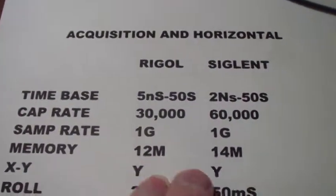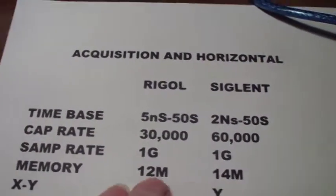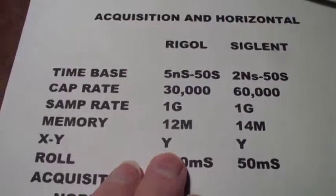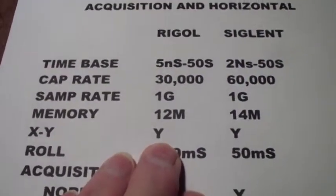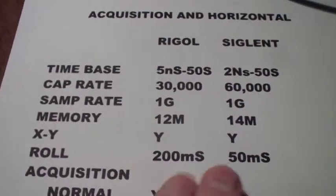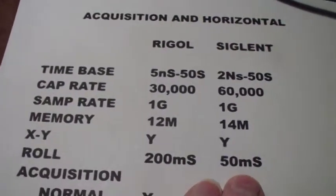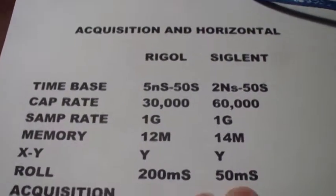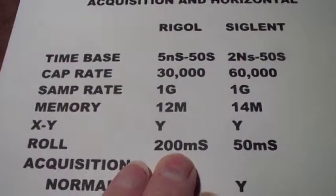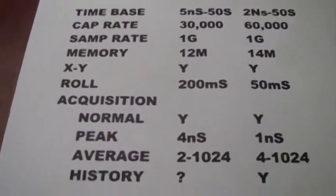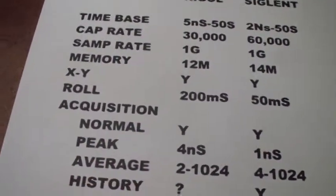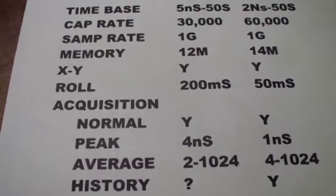The Rigol comes with 12 megabytes of memory and the Siglent with 14. You can buy a memory upgrade for the Rigol, but I'm looking at what you get when you buy the scope without options. They both have an XY mode — I'll show you that later. They both have a roll mode; the difference is the Siglent can go down to 50 milliseconds per division in roll mode while the Rigol can only go down to 200 milliseconds.